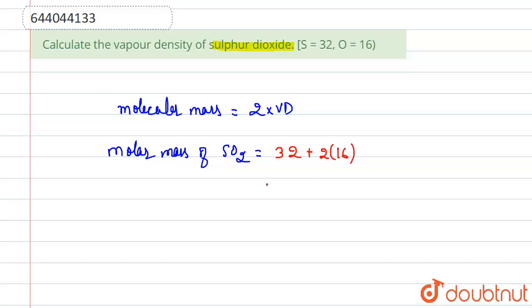This equals 64. So 64 grams is the molar mass of SO2.